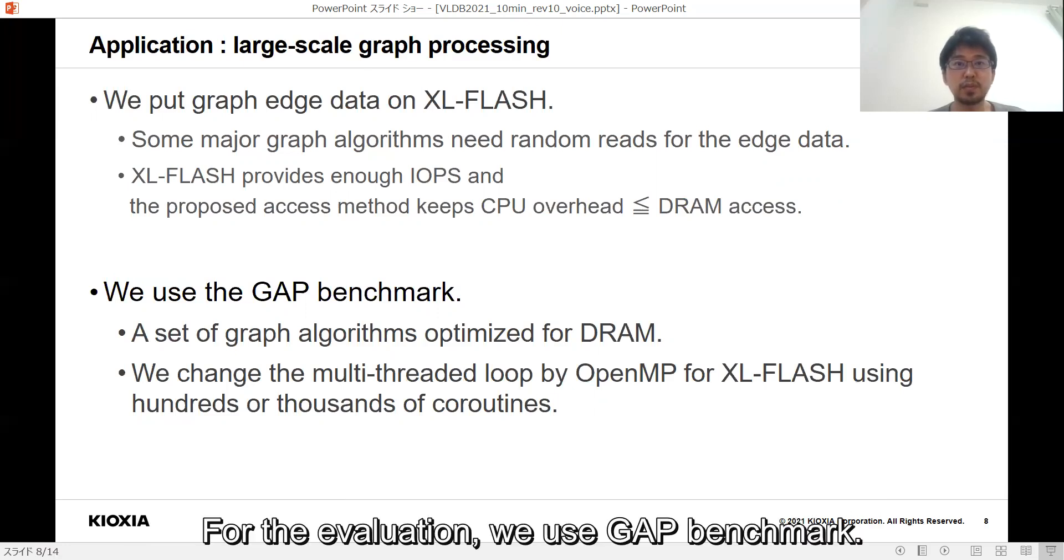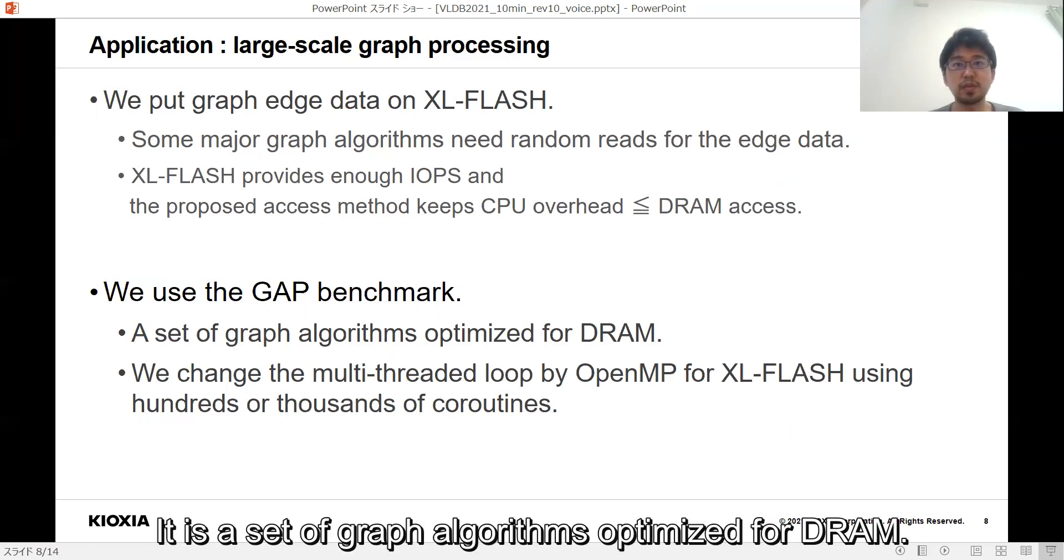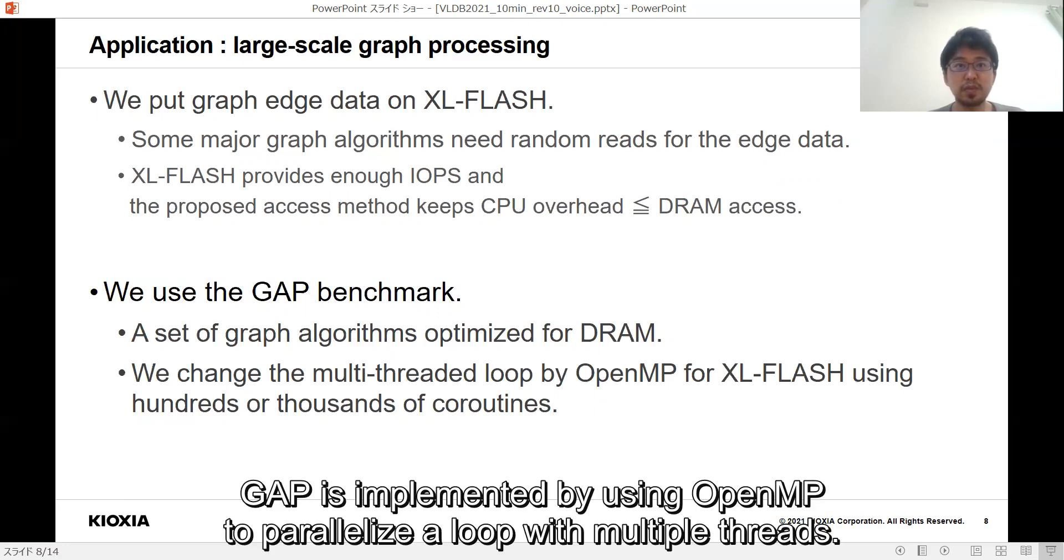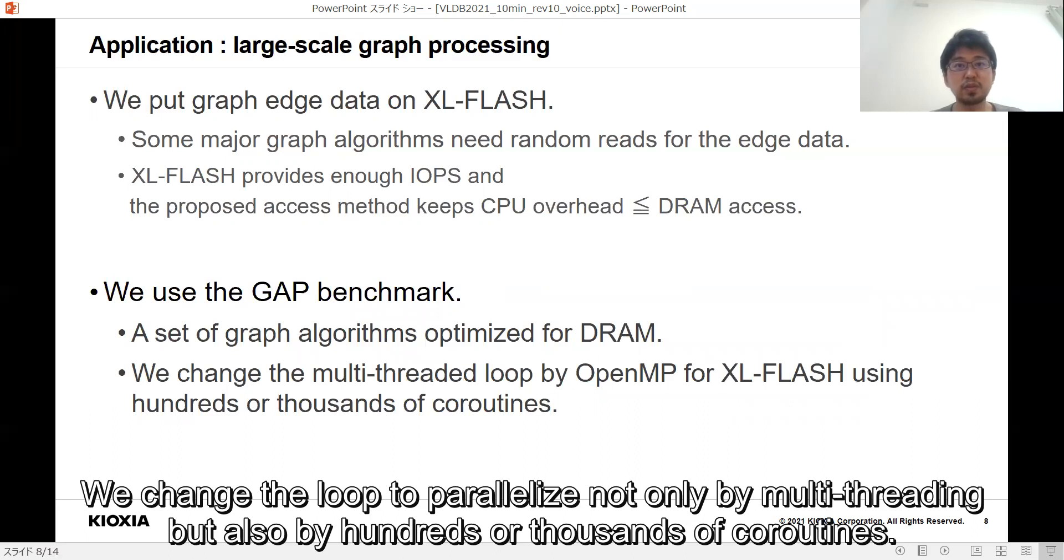For the evaluation, we use GAP benchmark. It is a set of graph algorithms optimized for DRAM. GAP is implemented by using OpenMP to parallelize a loop with multiple threads. We change the loop to parallelize not only by multi-threading, but also by hundreds or thousands of coroutines.